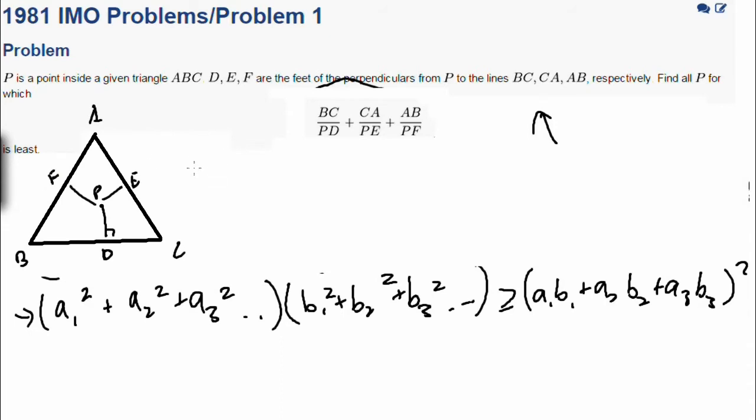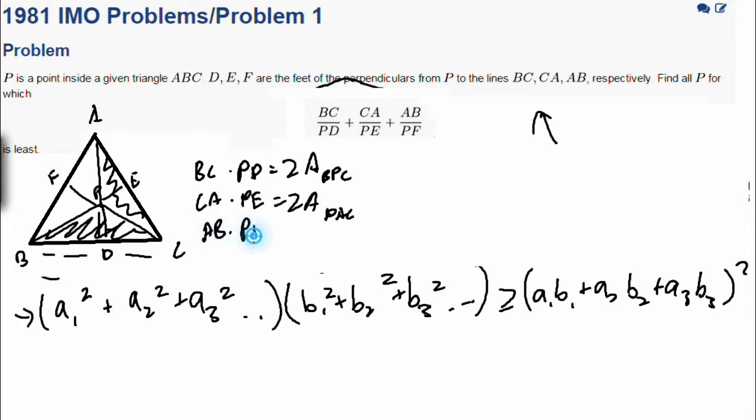What is the quantity of BC multiplied by PD? If you multiply these together, since this is the base and this is the height of this triangle BPC, PC times PD is equal to twice the area of this triangle. So that's equal to 2 times area BPC. And we do the same for the others. So CA times PE is equal to 2 times the area of PAC, and of course AB times PF is equal to 2 times the area of APB.